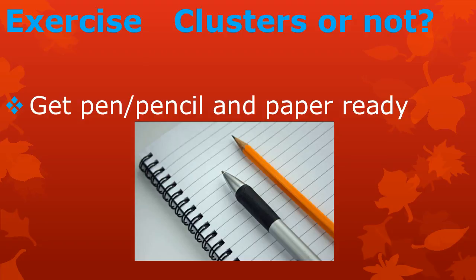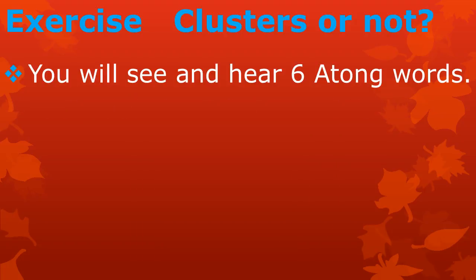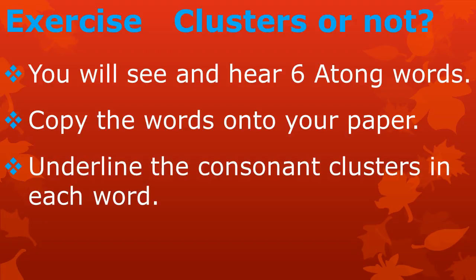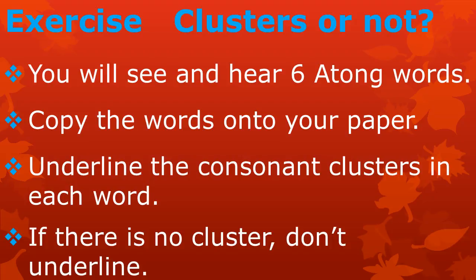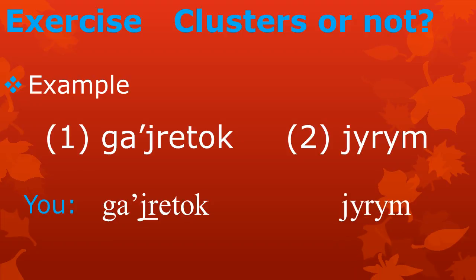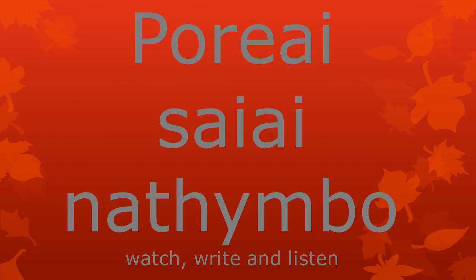Now let's do an exercise to see what you have remembered. For this exercise you need a pen or pencil and some paper, so pause this video to get them if you don't have them with you already. Exercise: Clusters or not. You will see and hear six Atong words. Copy each word onto your paper and underline the consonant clusters in each word. If you don't hear a consonant cluster, you don't underline anything. For example, you will hear GA-JRE-TO — you hear a cluster, so you underline J and R. You will hear JRE-M — you do not hear a cluster and will not underline anything. I will read every word twice. Ready? Here we go.